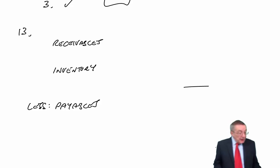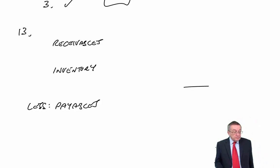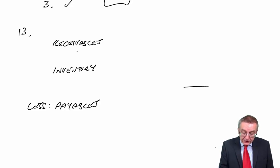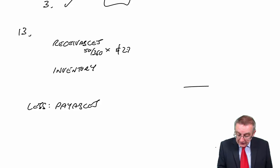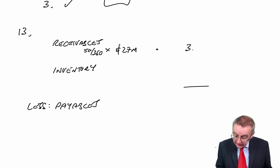So let's have a go. Receivables, well, we know how much we're selling, 27 million. Receivables days are 50 days. So you should find this very standard. With 360 days in a year, average receivables, 50 days' worth of sales, which is 3.75 million.